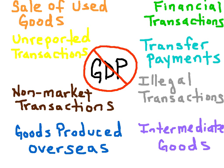GDP reflects production of final goods and services produced in a given year. So here are some things that we would not count toward the GDP: the sale of used goods or second-hand sales, financial transactions such as the purchase of a stock or bond, unreported legal business transactions, illegal business transactions, and transfer payments — public transfer payments from the government or private transfer payments between individuals.